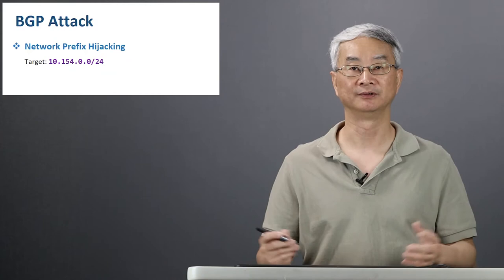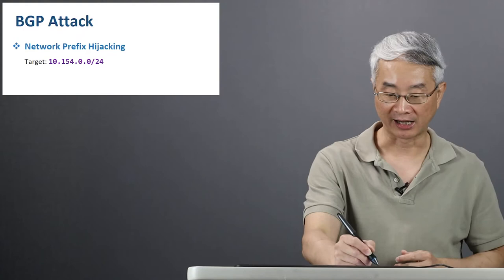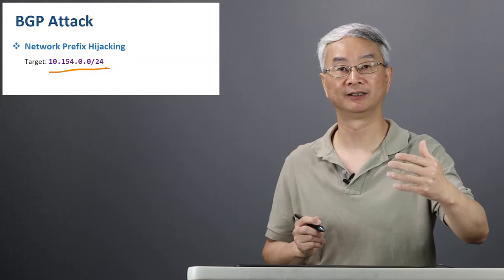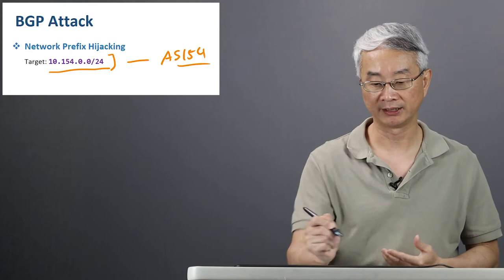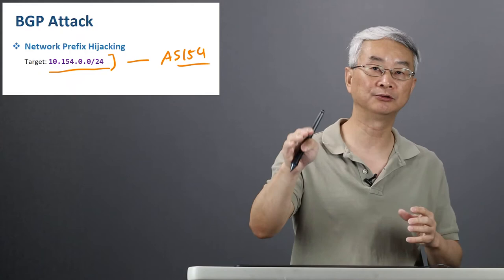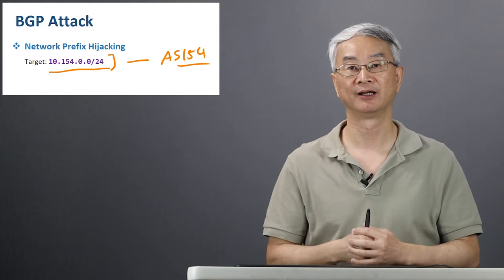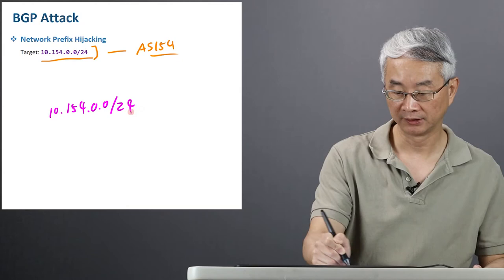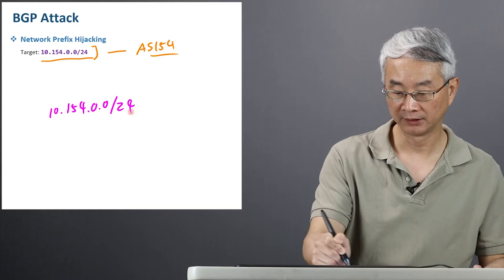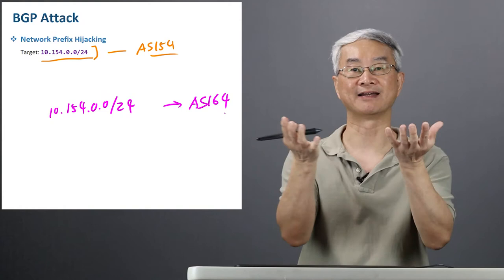A BGP attack in theory is extremely simple — you can explain it in maybe one minute. I want to black hole, or hijack, this one. This autonomous system belongs to, in our case, AS154, which announced to the entire world that this is the network they own. If you want to go to this network, come to them. That's what it means when you make an announcement. Now if I want to hijack that, I can say I own this — you can announce it yourself. Let's say I am AS164 and I make that announcement to the entire world. Now suddenly two people are announcing the same thing.